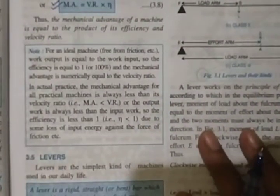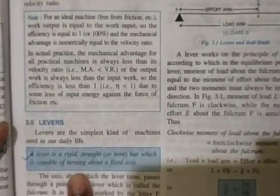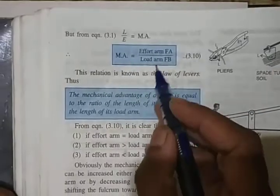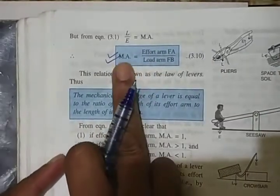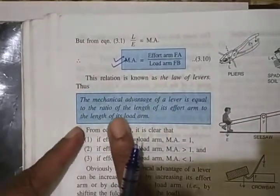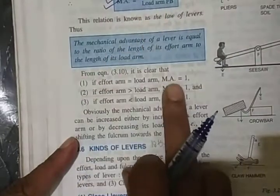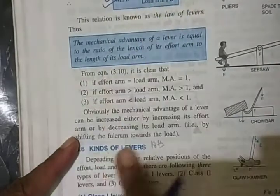Coming to levers. We are going to see two types of machines in this chapter: levers and pulleys. A lever is a rigid straight bar which is capable of turning about a fixed axis. The principle of lever is that clockwise moment equals anti-clockwise moment, giving us: load multiplied by load arm equals effort multiplied by effort arm. From this, MA equals effort arm upon load arm. If effort arm equals load arm, MA equals 1; if greater, MA is greater than 1; if lesser, MA is less than 1.